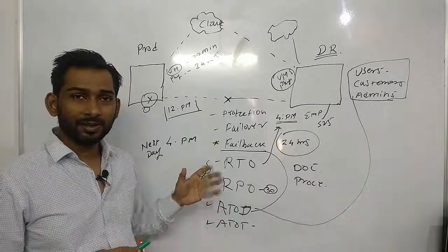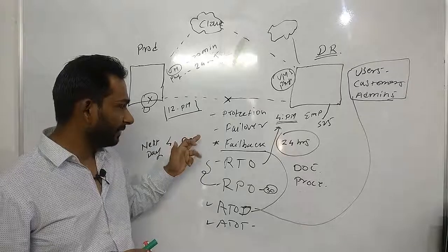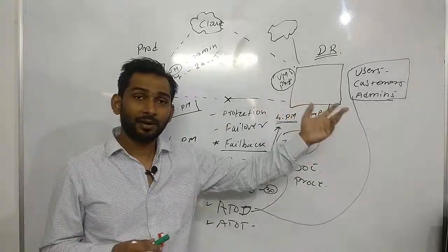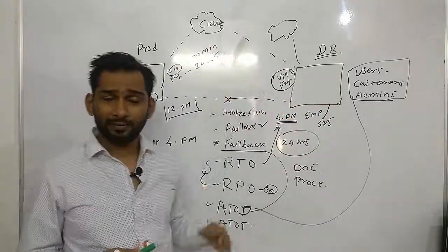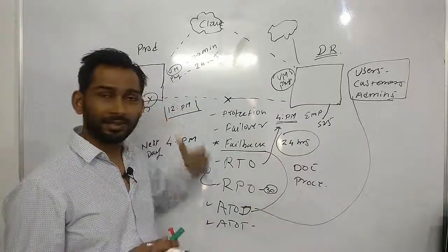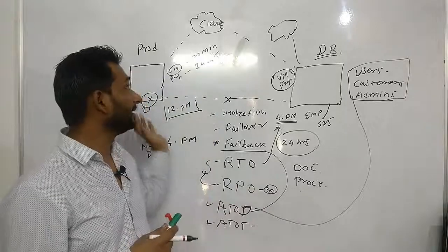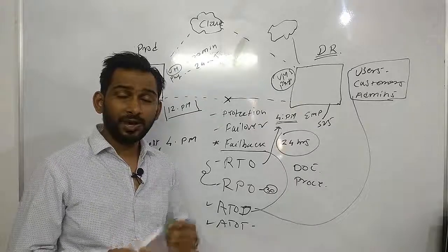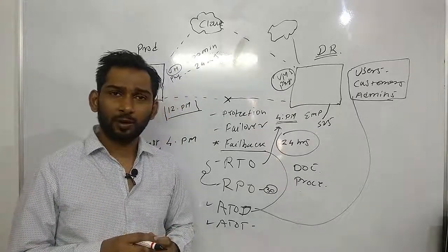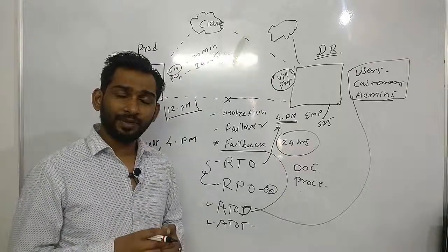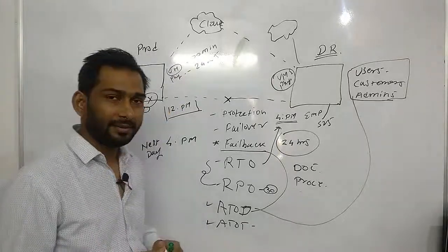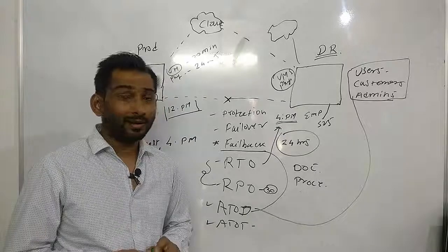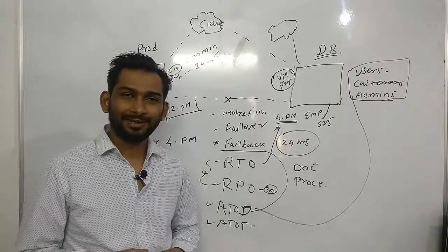I hope you learned a lot. We talked about protection, failover, failback, RTO, RPO, ATOD, ATOT, user access, and hybrid recovery. I have separate videos on cloud recovery and on-premise recovery that cover these details more thoroughly. If you have any questions, put them in the comments or contact me on my blog. Please share, like, and subscribe to the channel. Thank you so much for watching — have a nice day!